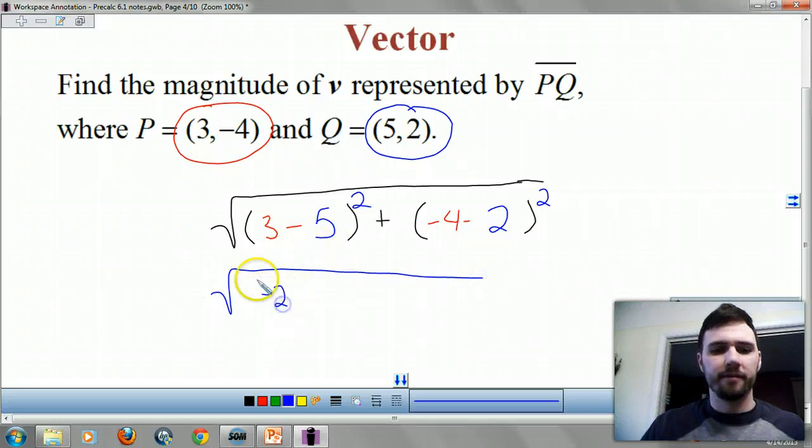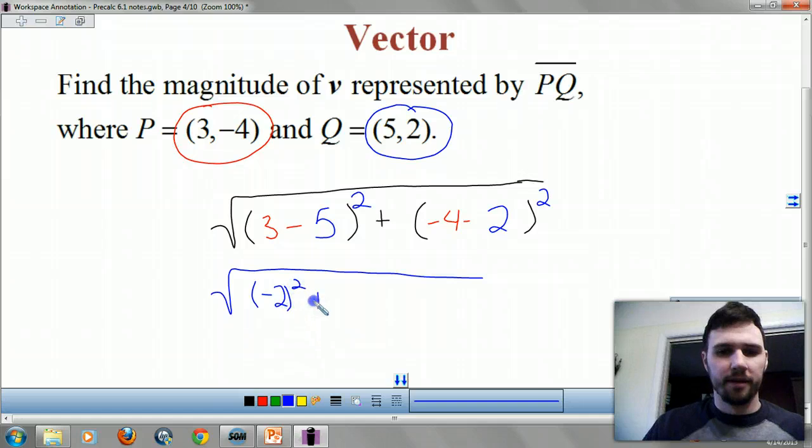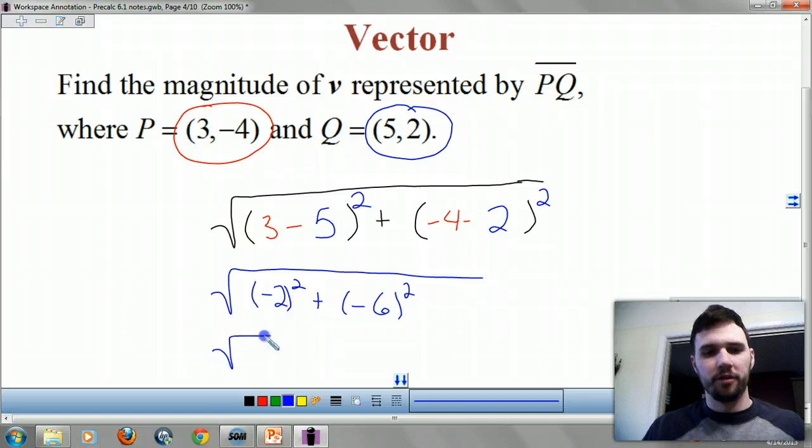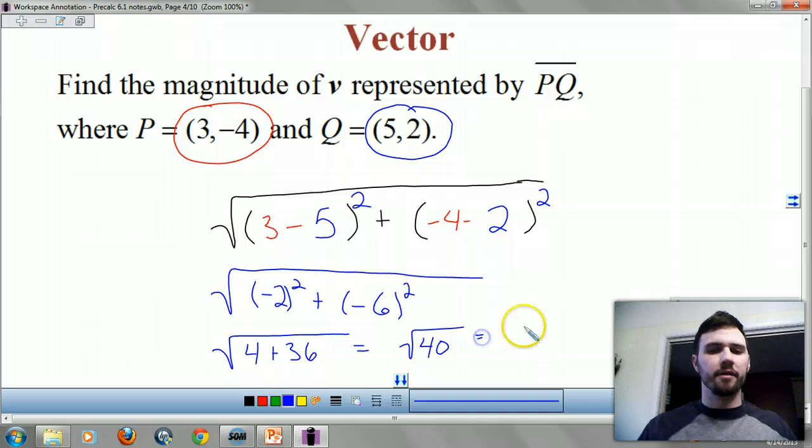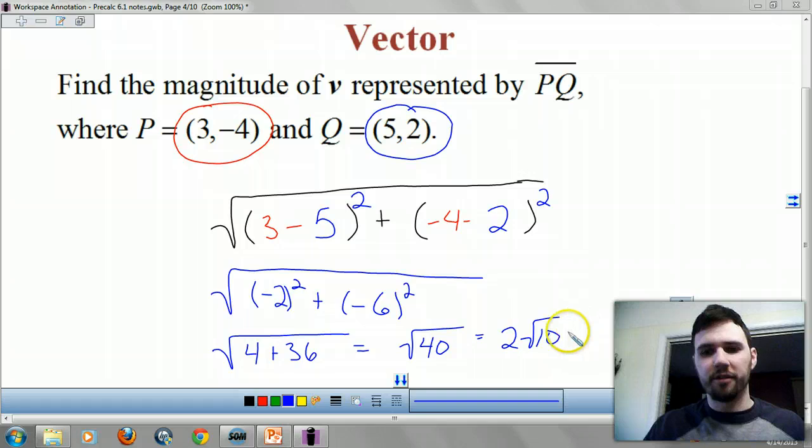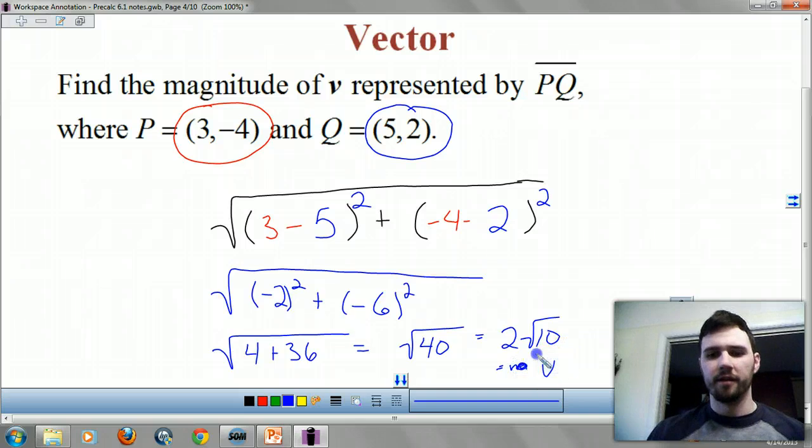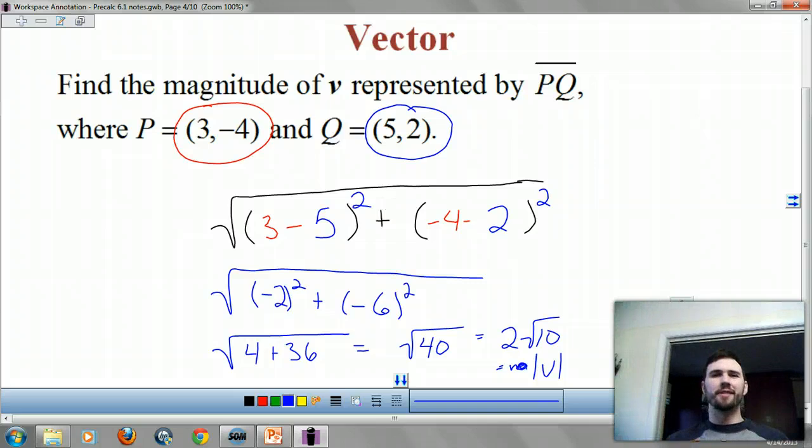Okay. So you get square root of negative two squared plus negative six squared. Right. So you get square root of four plus 36. So you get square root of 40. Also known as two root ten. So that's our magnitude. That equals our magnitude. Magnitude of v. That's the sign for magnitude. It's like the absolute value sign.